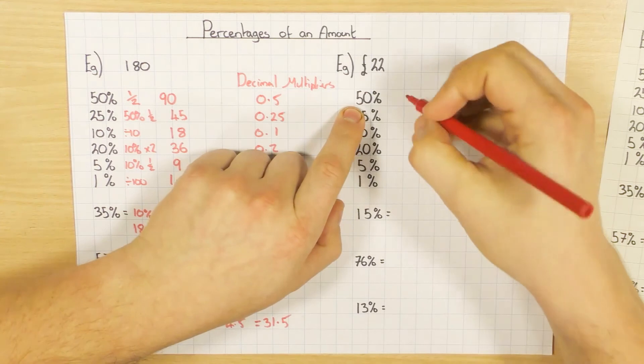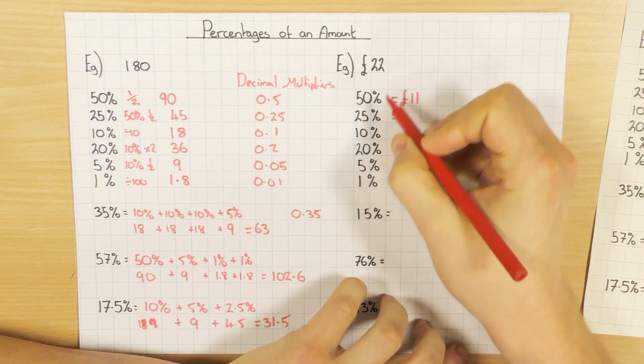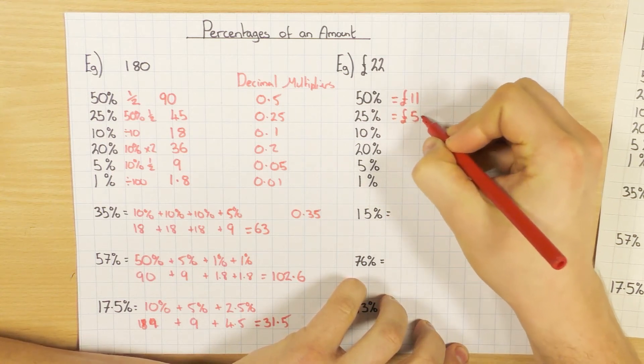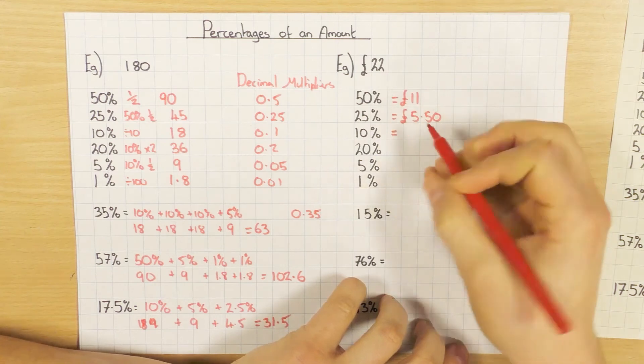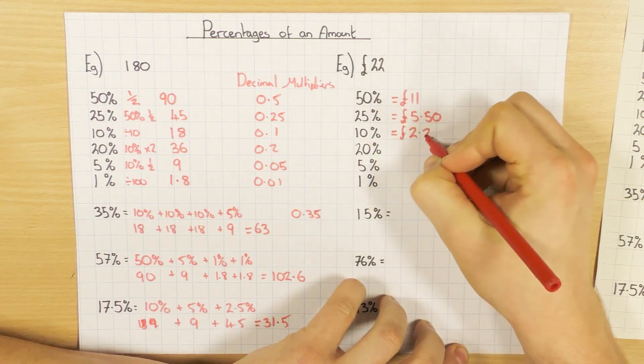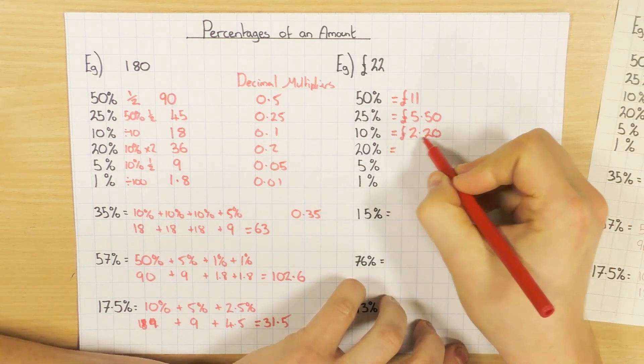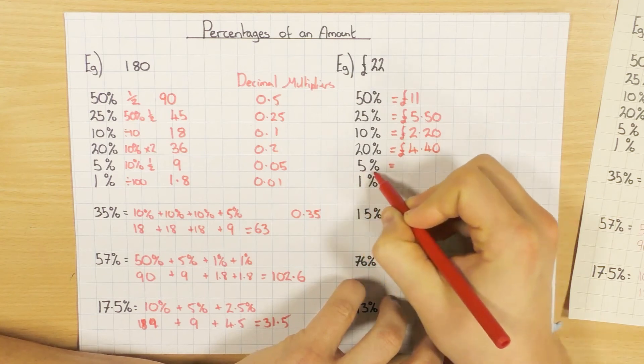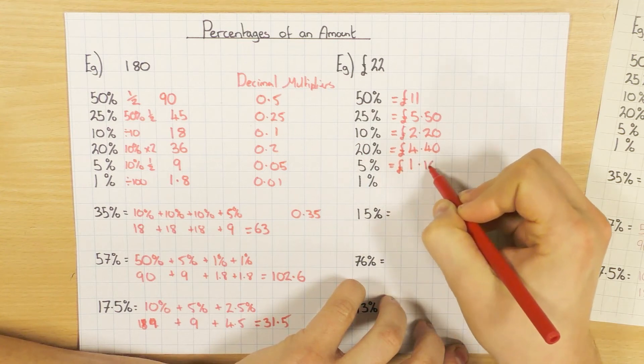Same thing then. So 50%, I'm going to half it, just like I did over here, to get £11. To find 25%, I'm going to half it and half it again, or find 50%, which is 11, and then half of that. So half of 11 is £5.50. Whenever you're dealing with money, make sure you put two decimal places in, otherwise you will lose marks. 10%, I'm going to divide this by 10. So 22 divided by 10, £2.20. Notice again, I'm putting in my zero there because I'm dealing with money. 20%, well, I found 10% and I'm going to double it. So that's £4.40. Again, notice that zero.